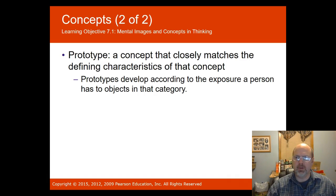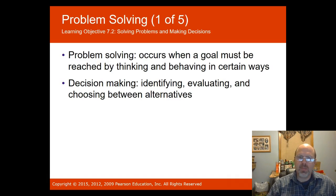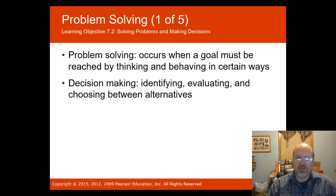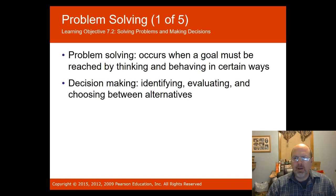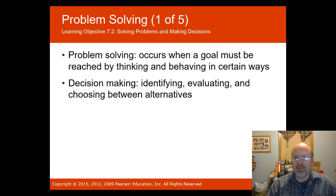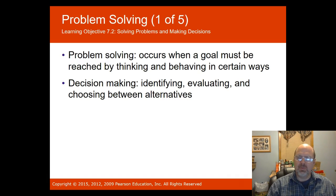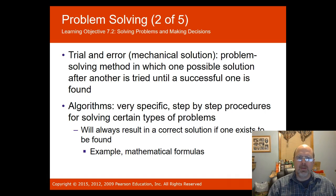Problem-solving occurs when a goal must be reached by thinking and behaving in certain ways. Decision-making is identifying, evaluating, and choosing between alternatives. We are bombarded with choices every day — it can be a very tiring process, using a lot of our brain's resources. Often emotionality wins out over rationality. There's something called buyer's remorse where we regret the choices we made.